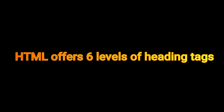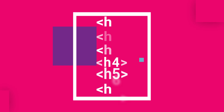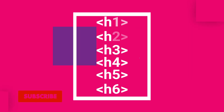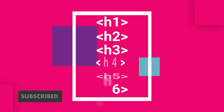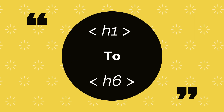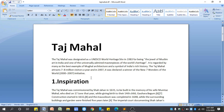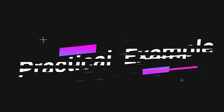To make this type of headings and subheadings we use heading tags in HTML. HTML offers six levels of heading tags: h1, h2, h3, h4, h5, and h6. From h1 to h6, each heading tag has its own properties like size and others, as we already observed in the Taj Mahal example.